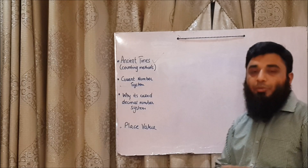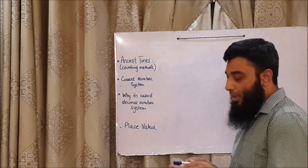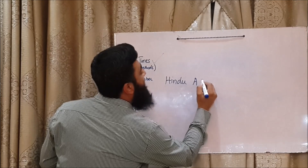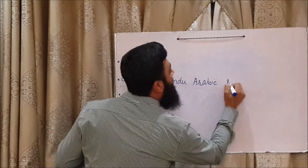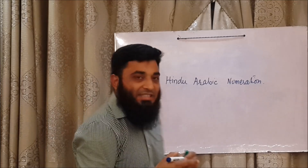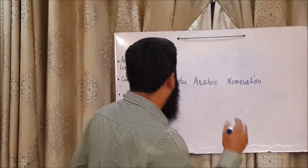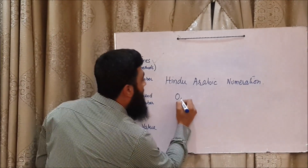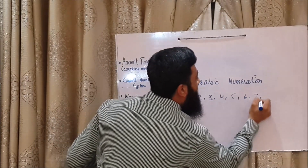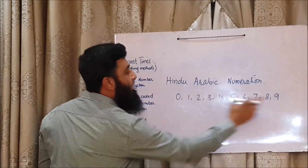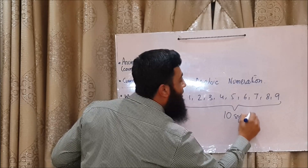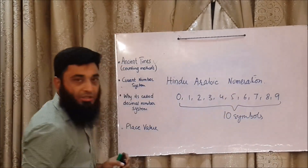Now the current number system. What we are following these days is called Hindu-Arabic numeration. As you are all aware, we have ten symbols: zero, one, two, three, four, five, six, seven, eight, nine. There are ten symbols that we use in the Hindu-Arabic numeration system.